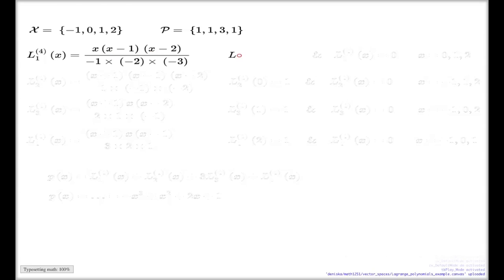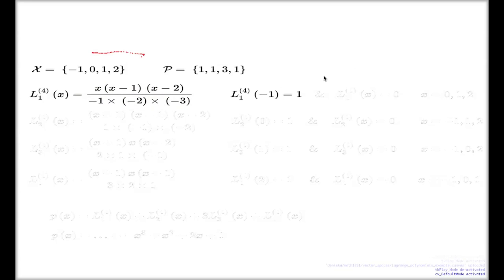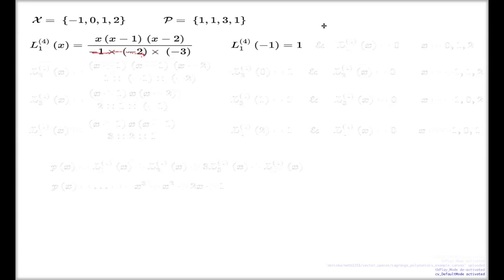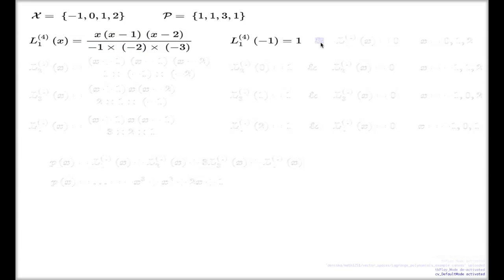You can check this, that this polynomial at the point negative 1 delivers 1, right? If you put negative 1 across this expression, it will be exactly 1. And my polynomial, the same polynomial, delivers 0 value for any other point in my set, for x equals 0, 1, and 2.